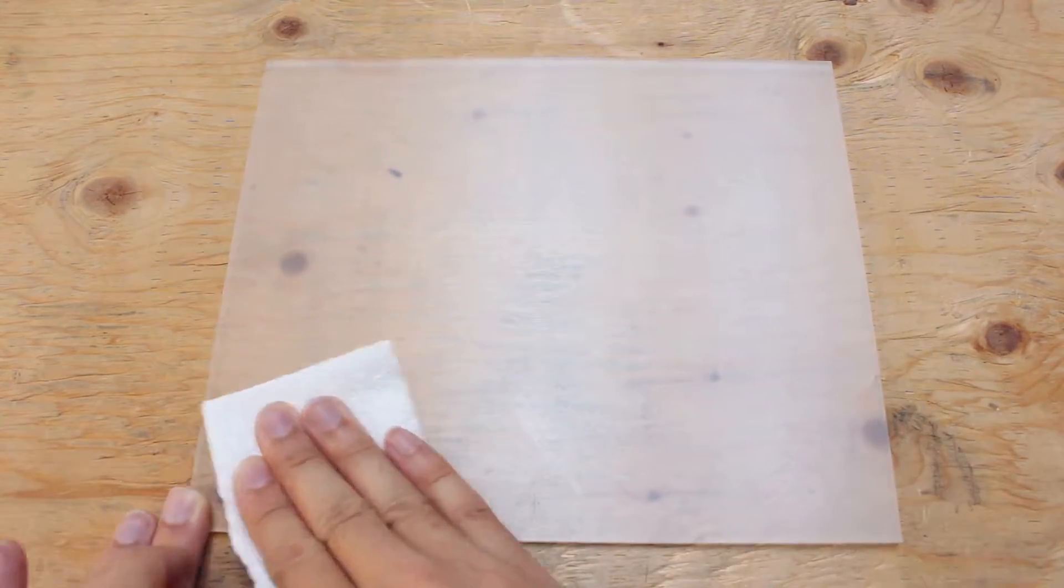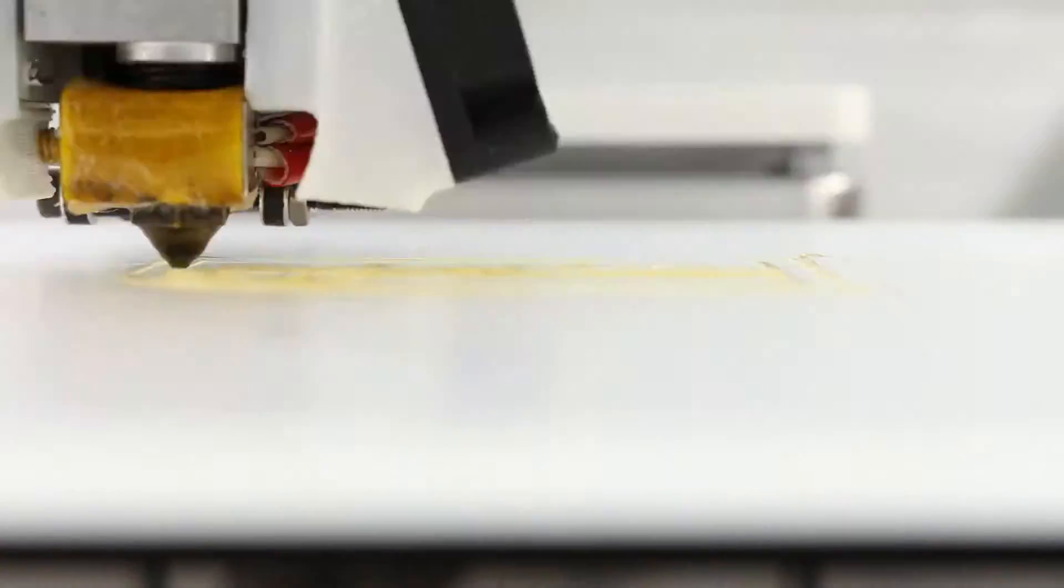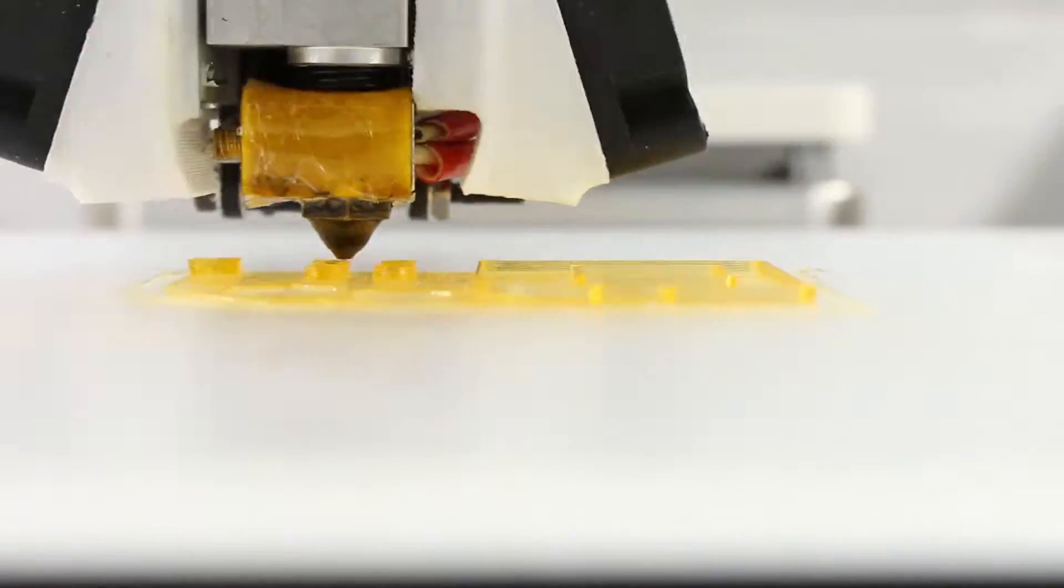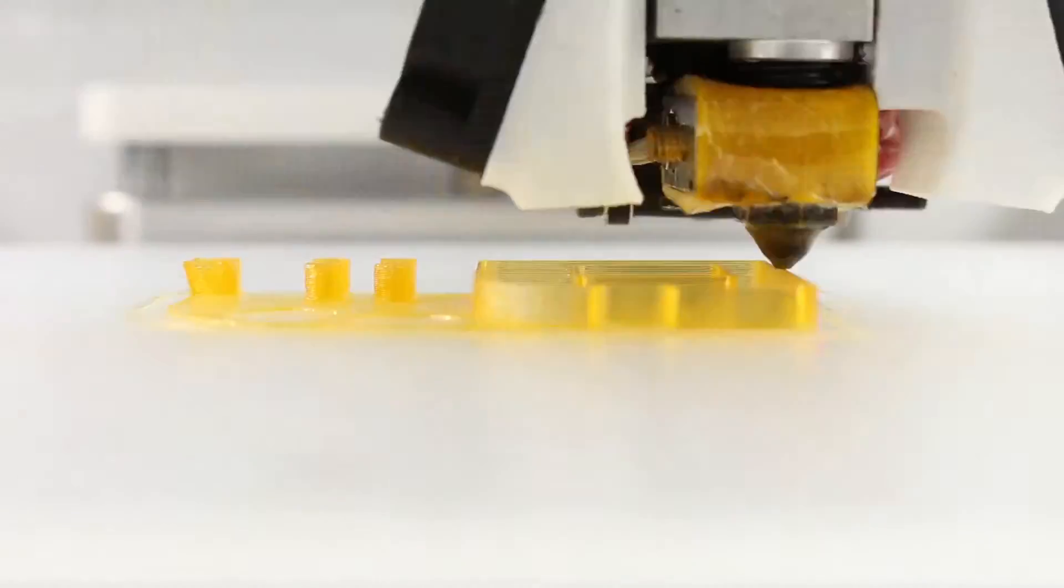Once we are done, let's try printing with it. The filament is sticking to the acrylic sheet. However, it is still very uneven in the middle of the print. It looks like the filament is failing to stick on.